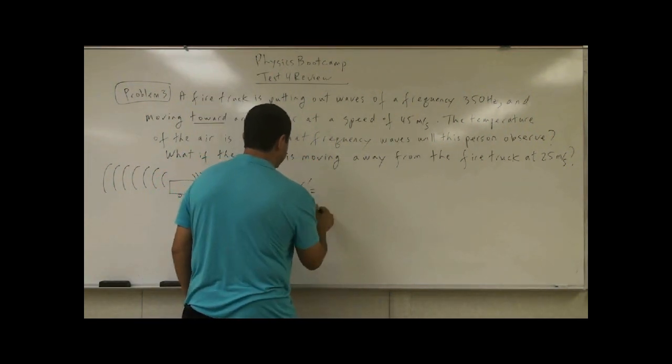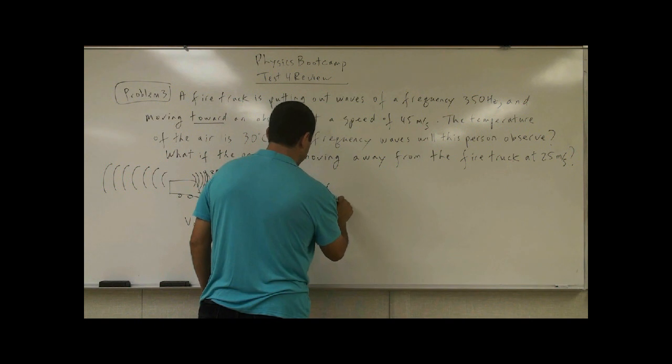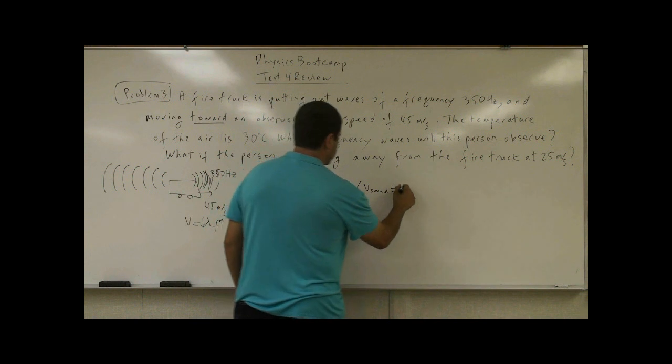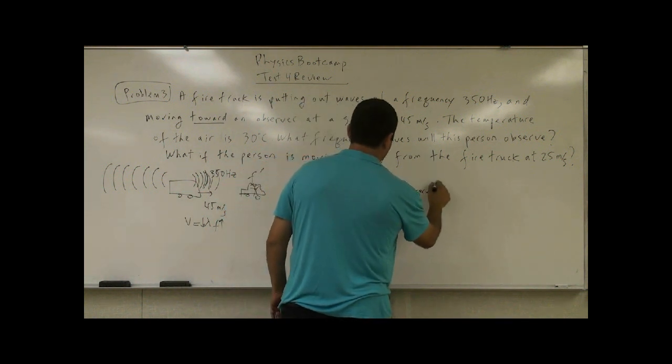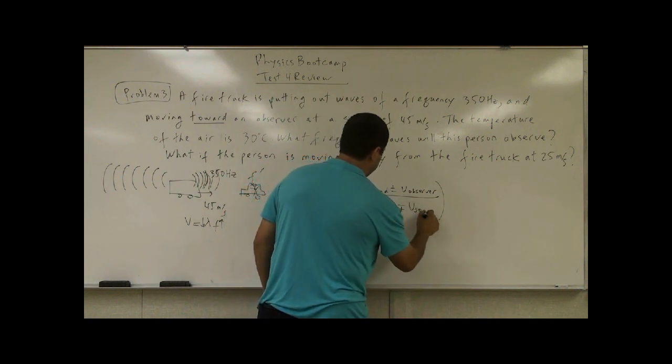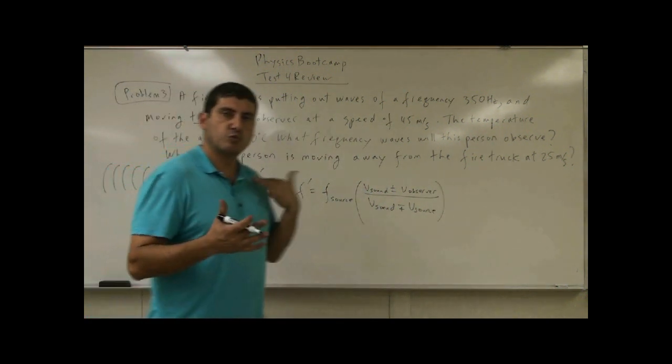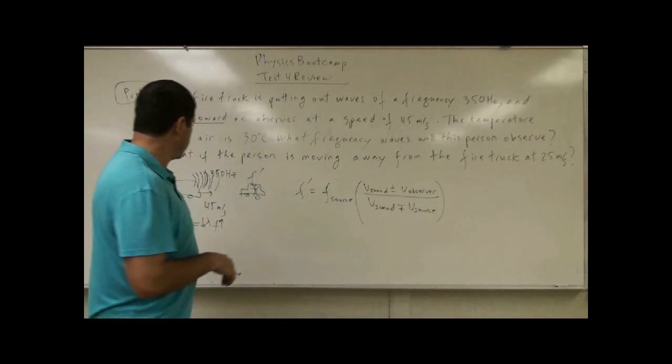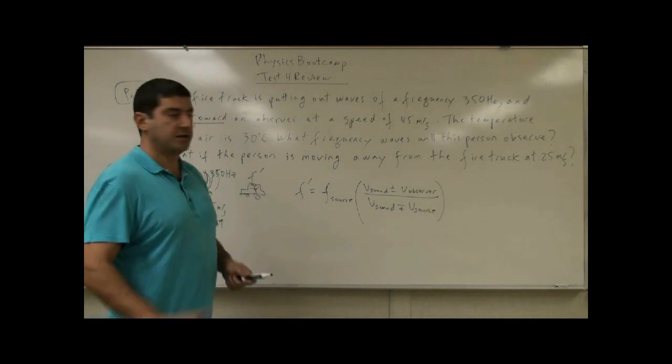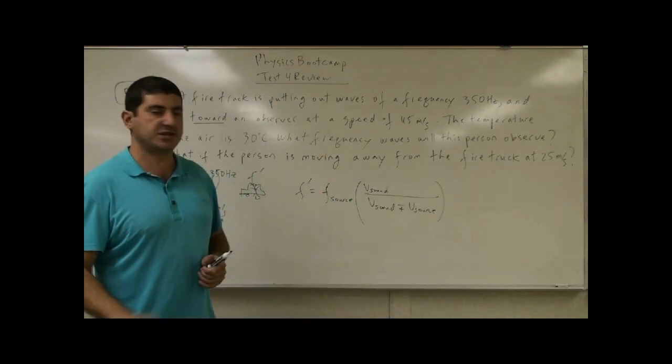Governing this relationship, the equation is F prime. F prime is the frequency that you're going to hear is equal to the frequency of the source times the velocity of sound plus or minus the velocity of the observer divided by velocity of sound minus plus the velocity of the source. So let's go over when do you use minus, when do you use plus. For now, let's say the person, the observer standing still. So the observer's velocity is gone.